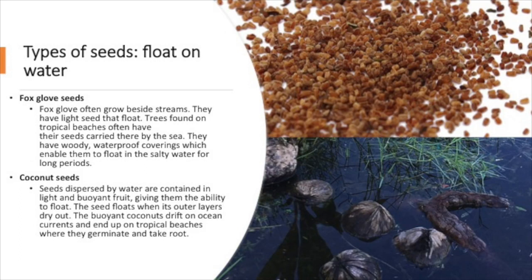And then you have your last types of seeds. And these seeds float on water. So your first seed is a foxglove seed. We actually grow these at the Dixon ourselves. But these are a lot of these are grown beside streams. And they have light seeds that float. And so these trees are found on tropical beaches often have their seeds carried there by the sea. Even though we're not close to the sea, we can still grow them in Memphis, Tennessee. And so they have a woody waterproof covering which enables them to float in the salty water for long periods of time. Which is kind of cool. So they can just go down for as long as they want to. And then they'll hit the land. And then they'll grow more trees and more beautiful flowers.